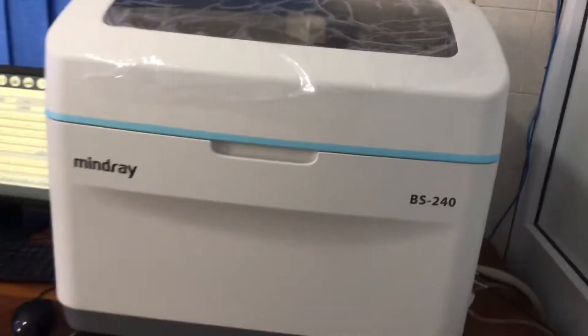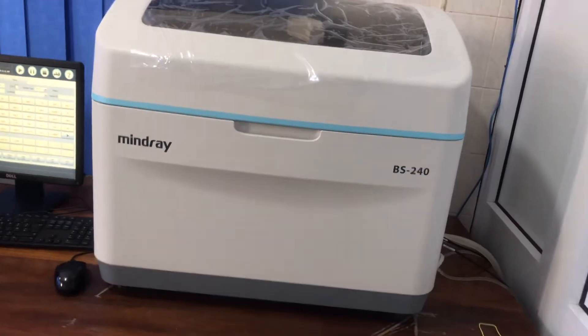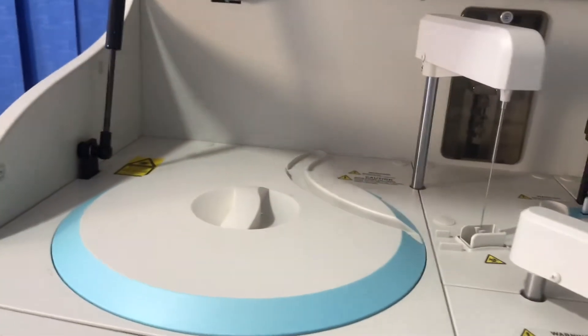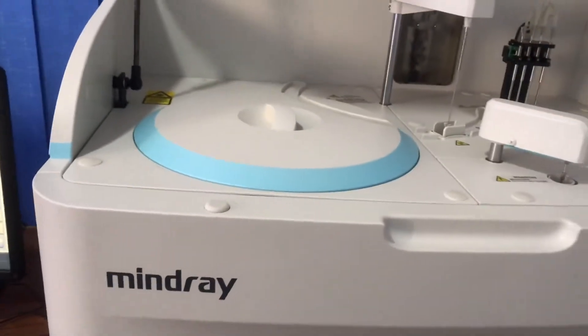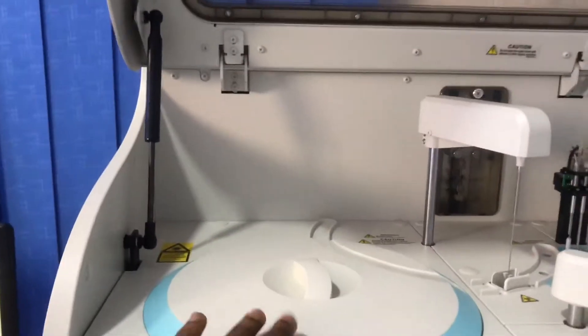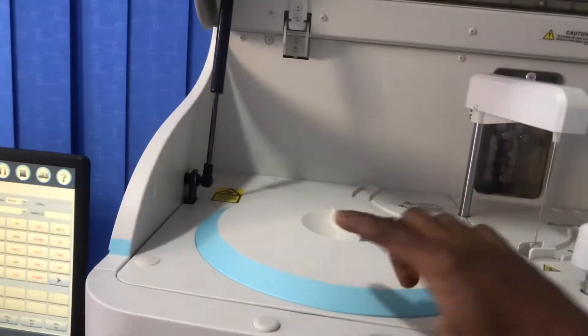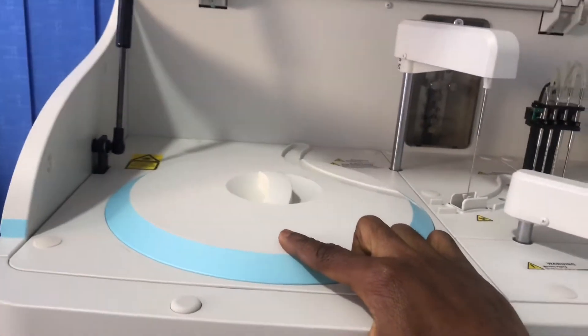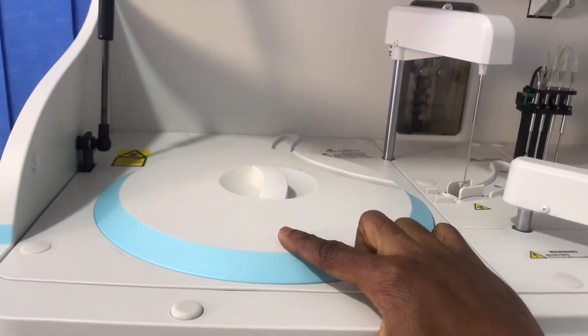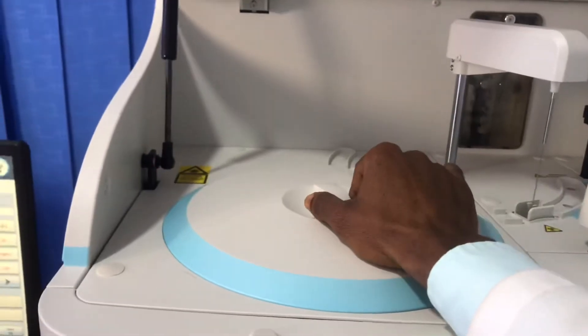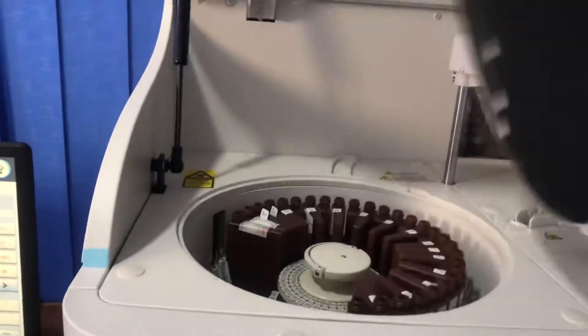So this is how it is when closed, and open. So let's start. This side is where we have the sample and reagent carousel. So I'm opening it now.